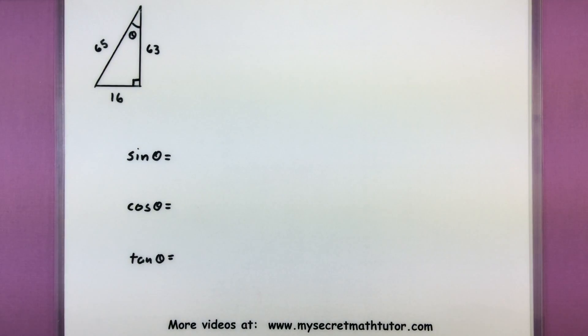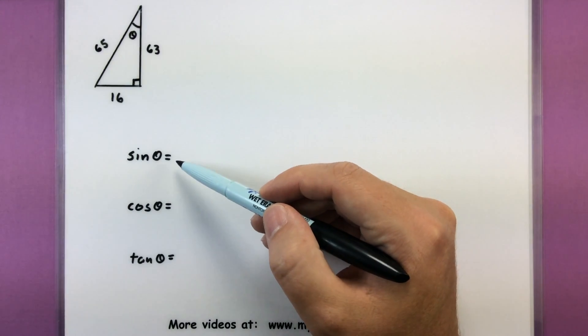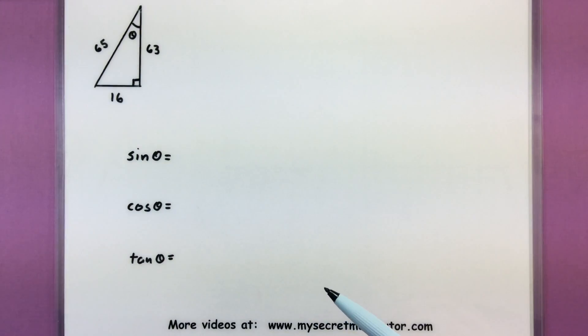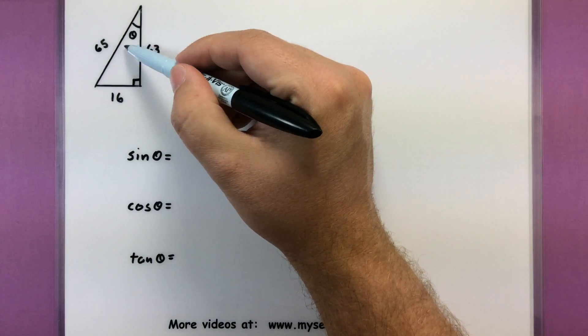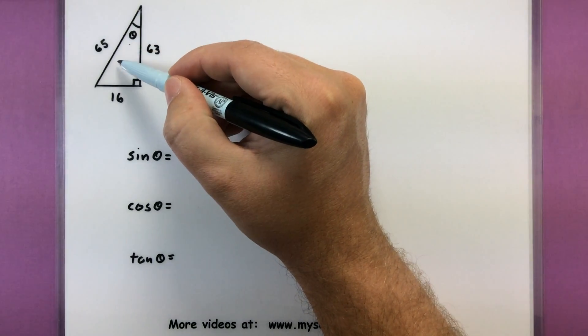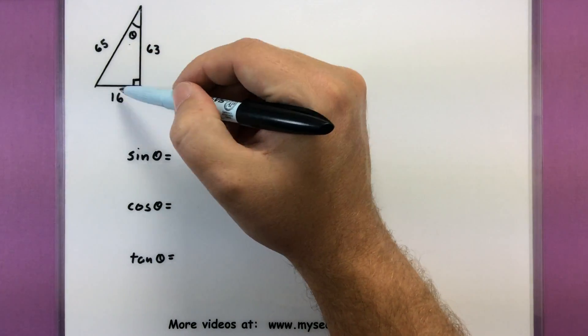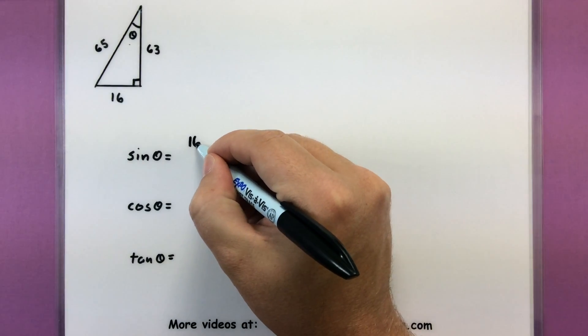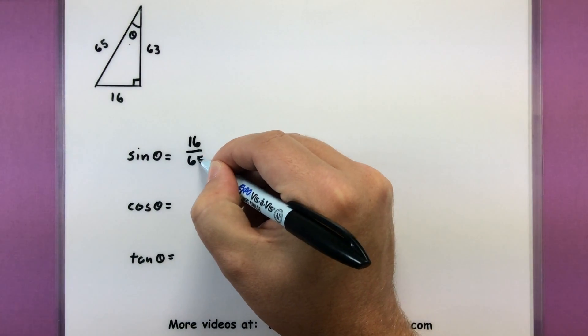It changes what sides are adjacent and which sides are opposite. So it does change what values we're actually getting. Let's give it a try for this one. So here I want to figure out sine of theta, which is the opposite side over the hypotenuse. Since I'm talking about this angle here, I'm really thinking about the opposite side being the sixteen. So this would be sixteen over sixty-five.